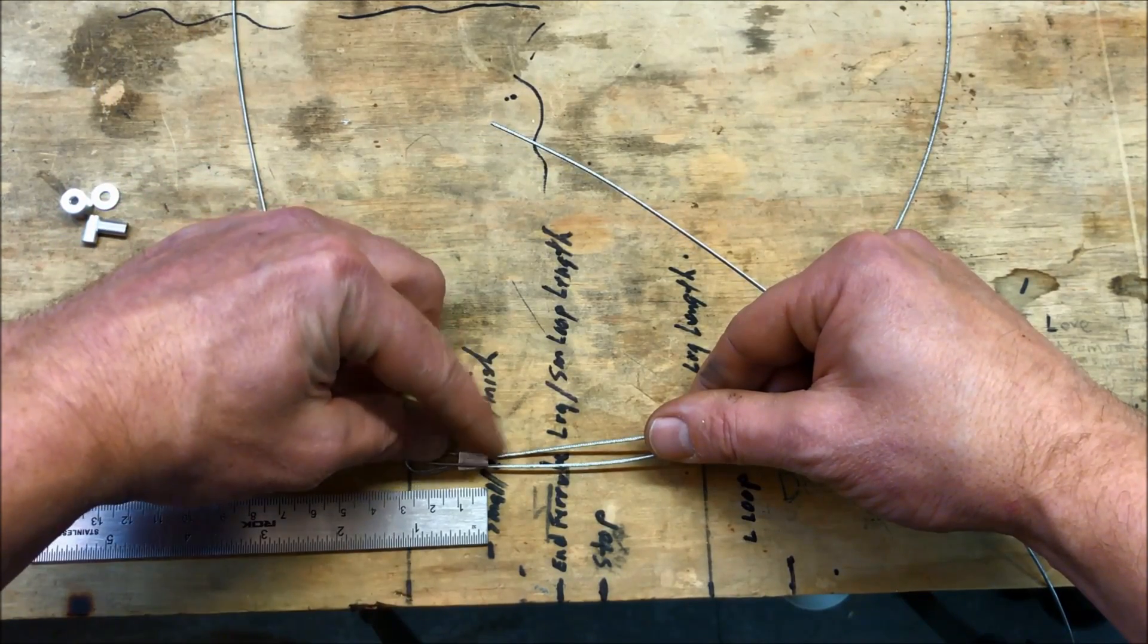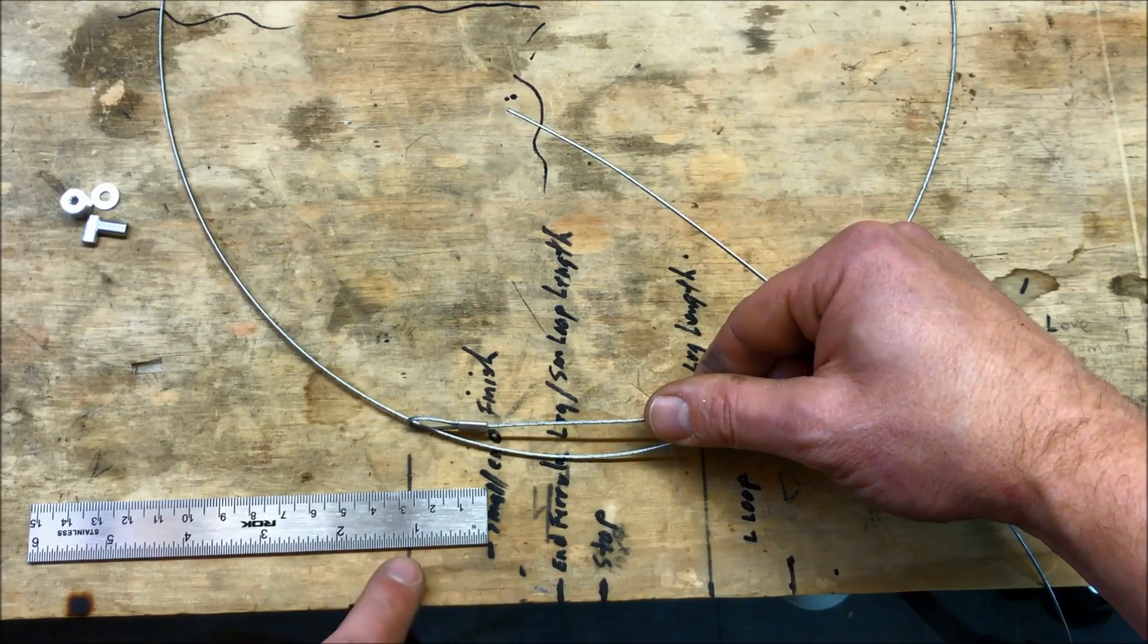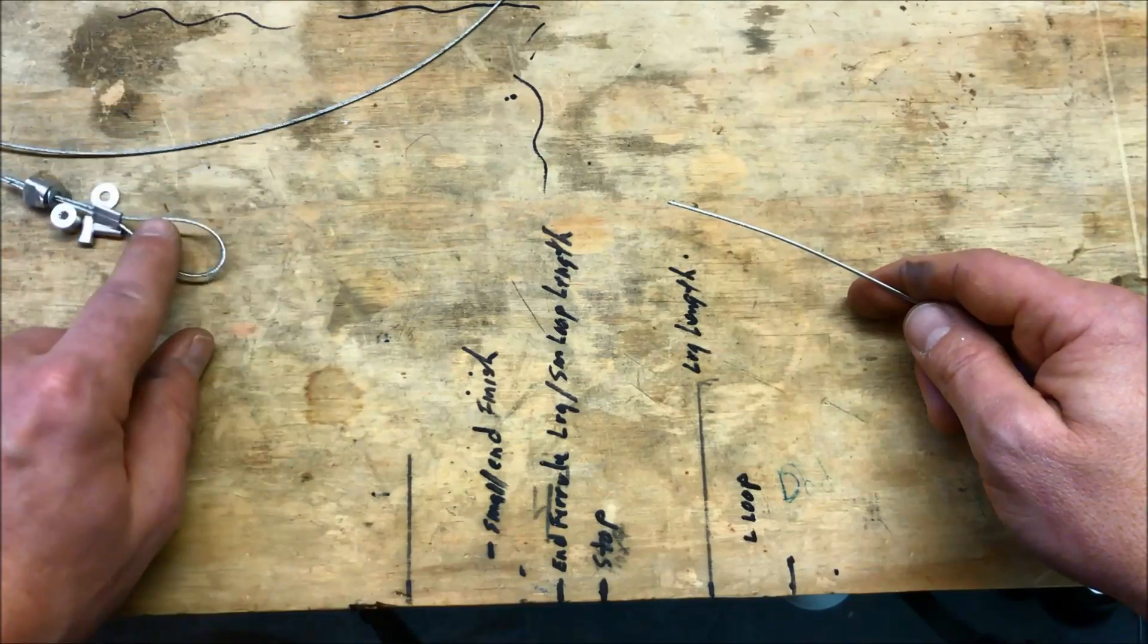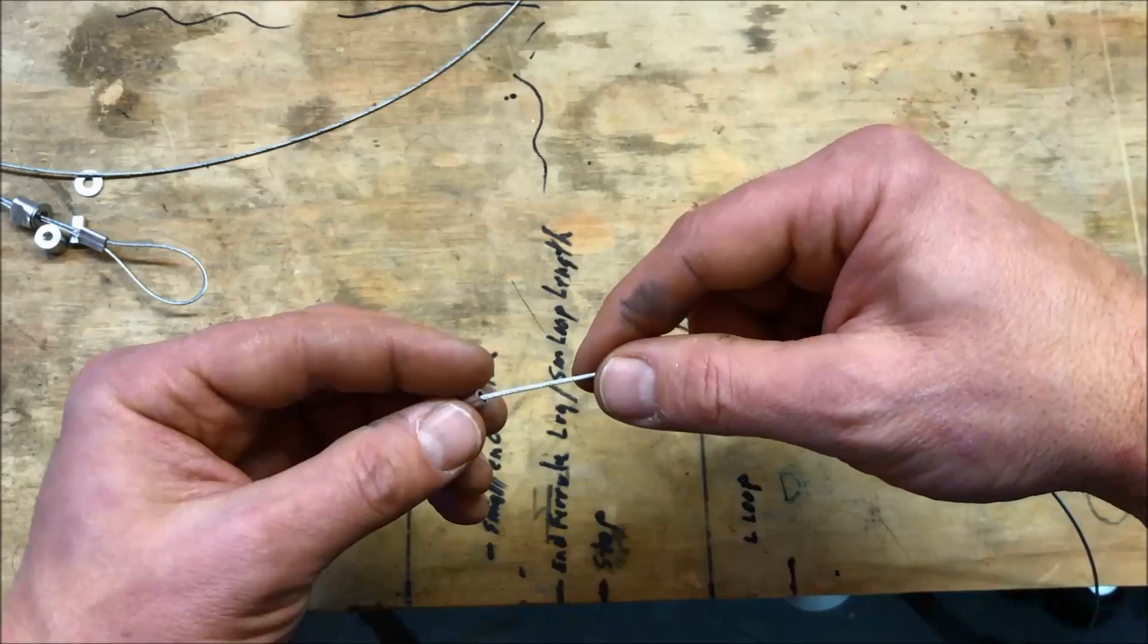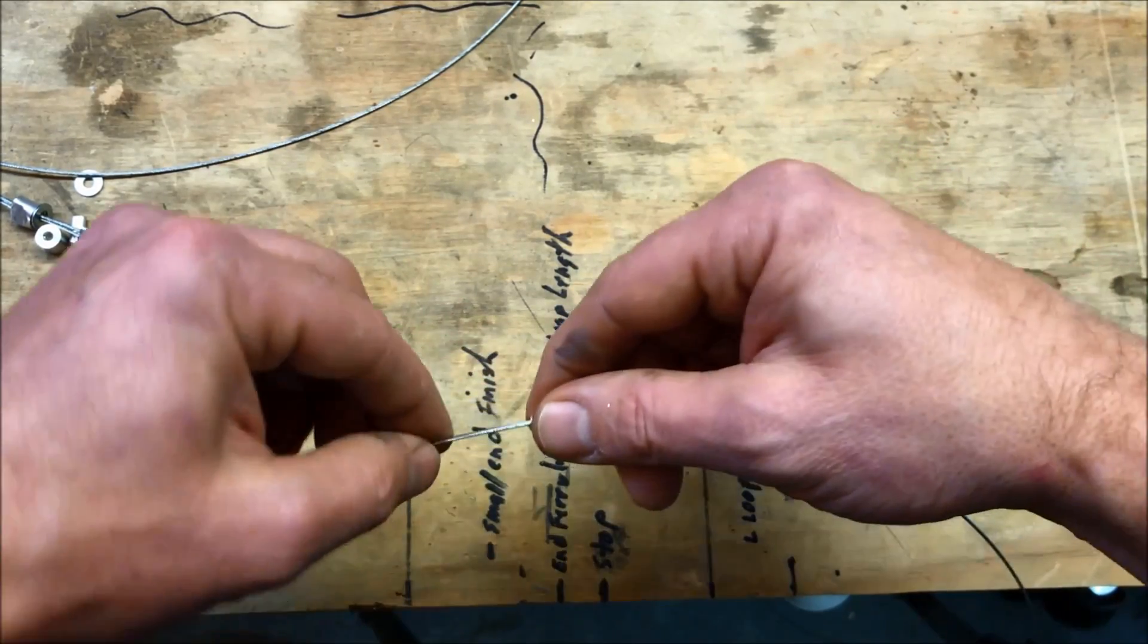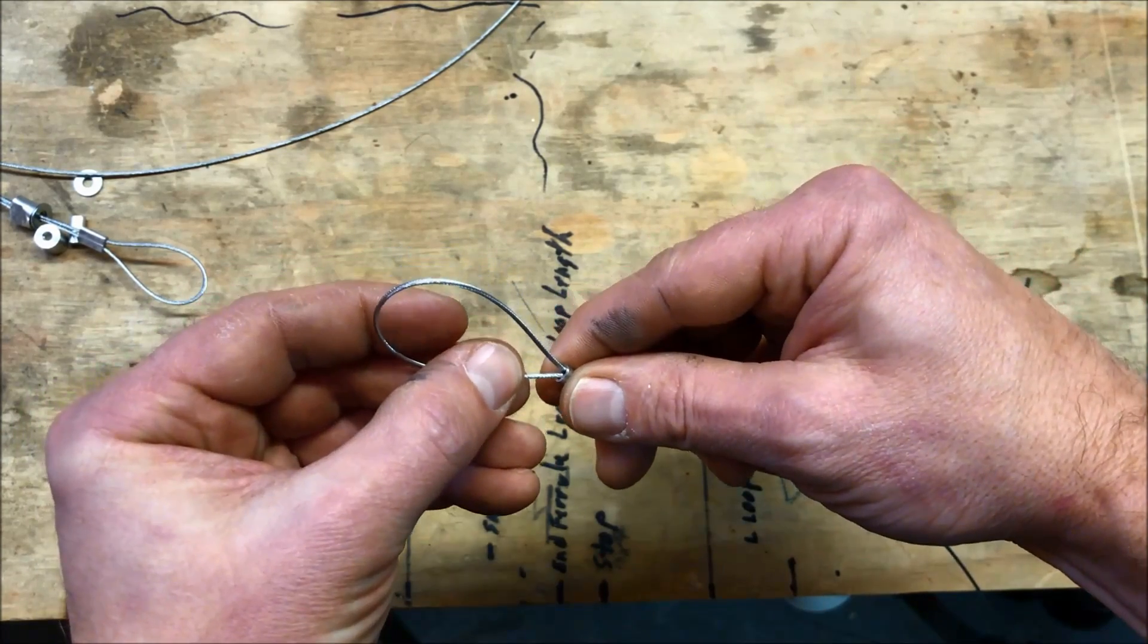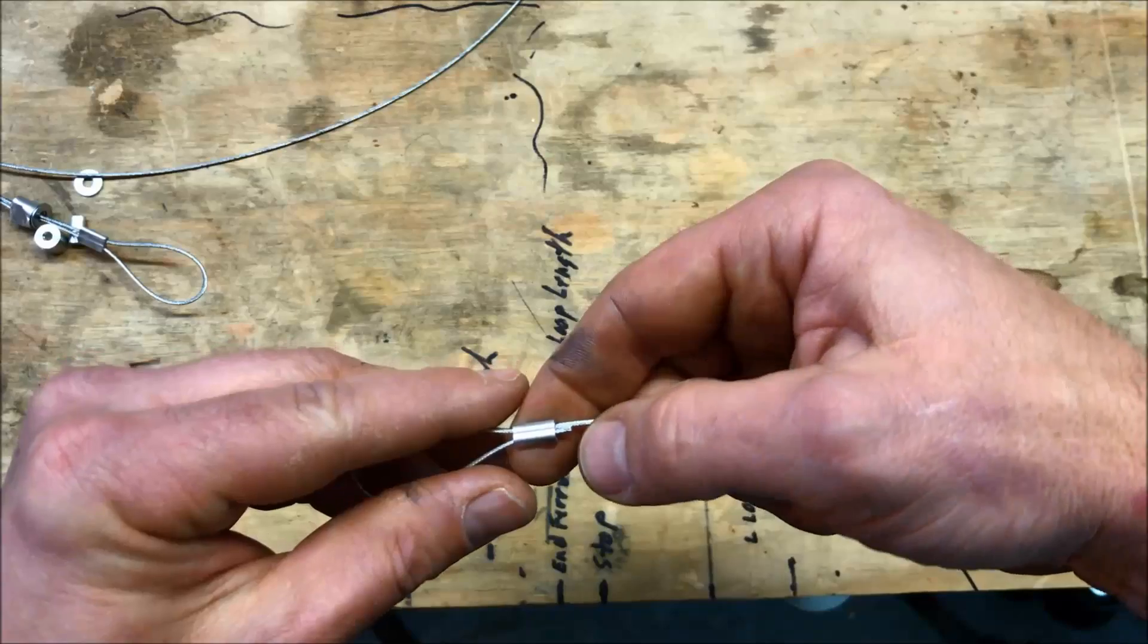So end of ferrule is right here. Probably like an inch, inch and a quarter somewhere in between there. So you have all your stuff ready to go set aside. You got a double ferrule right here. Stick it in and feed it through the other end as best you can. Kind of like I have a needle here, it's a little bit tough.